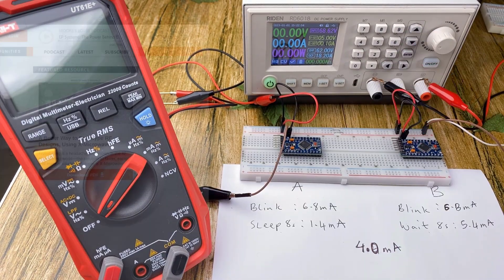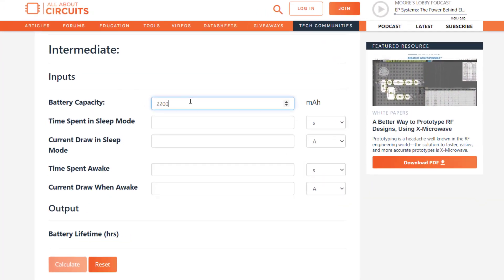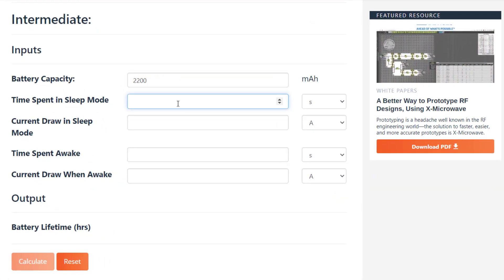Given a battery capacity of 2200 milliamp hour, it had 8 seconds of sleep or 8 seconds it should have been sleeping and consumed a current of about 5.4 milliamps. So we change this here to milliamps and then the time spent awake is 2 seconds which it uses to turn on the LED and then from there it draws about 6.8 milliamps during that period.